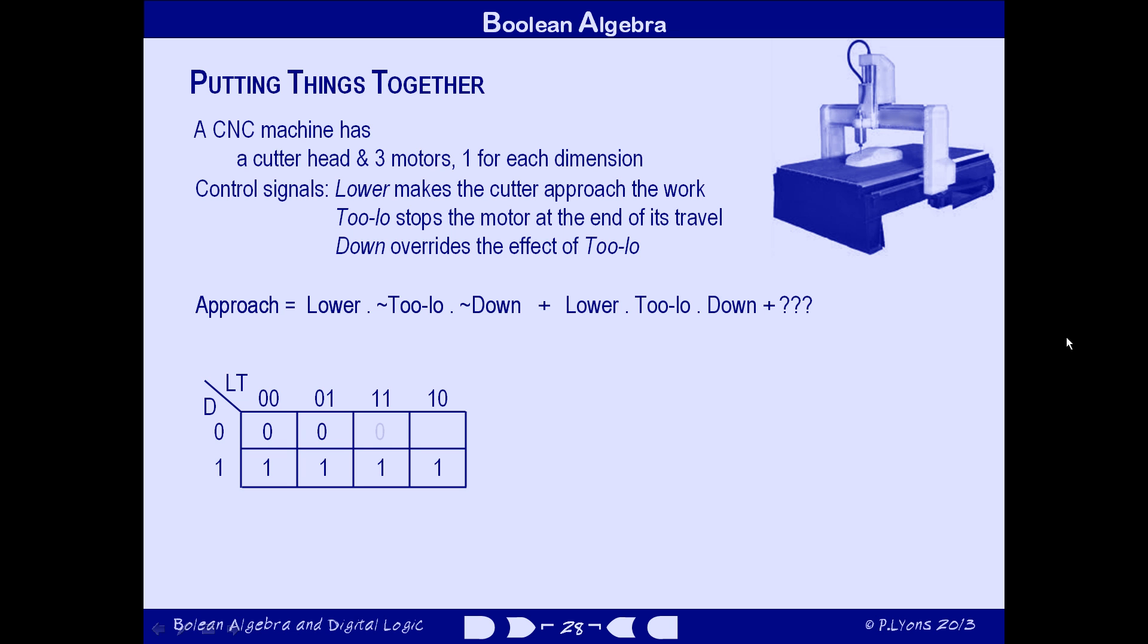Right. Now the program wants to lower the cutter, but the cutter is too low, and the operator has not pressed the down button. The cutter should not be allowed to approach the workpiece. Finally, we reach the situation that I guess you could call the standard situation. The program wants to lower the cutter, it's not too low, and the operator has not pressed the override button. So we allow it to approach the workpiece. Right. Well, now we put rings around a couple of entries in the K-map, and we can write down the minimized Boolean expression. Here it is. The cutter will be instructed to approach the workpiece if the operator says down, or the control program says lower, and the cutter is not too low.